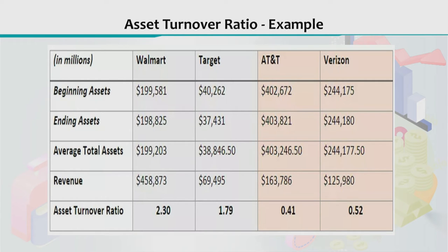In this example, you can see data for all four companies, with values written in millions. We have taken beginning assets as well as ending assets for each company, because we will use average total assets in the denominator. To calculate the average, we take the value at the beginning of the year and the value at the end of the year. Beginning and ending assets for Walmart, Target, AT&T, and Verizon have all been listed here.